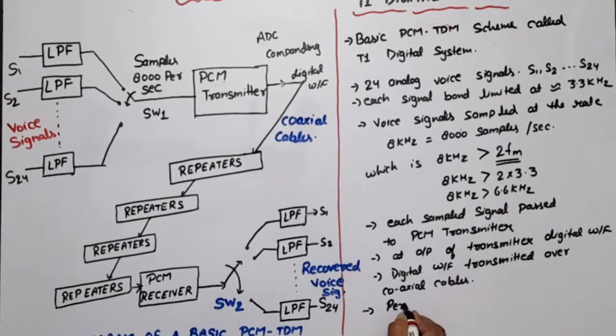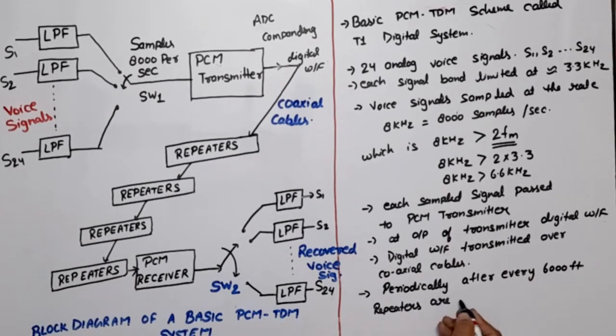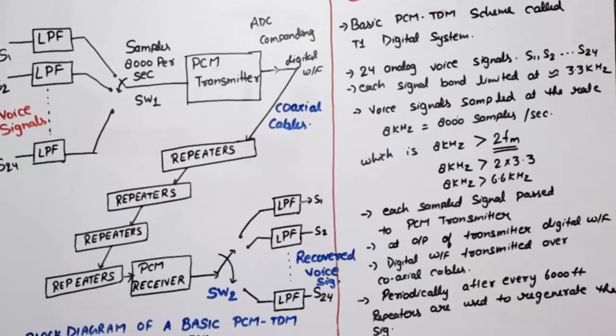Periodically, after every 6000 feet, repeaters are used to regenerate the signal. The function of repeaters is to regenerate the signal - when the PCM transmitter transmits the signal, repeaters amplify it and create a distortion-less signal to transmit further.